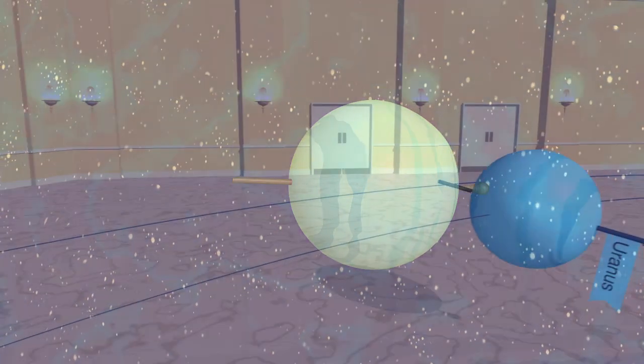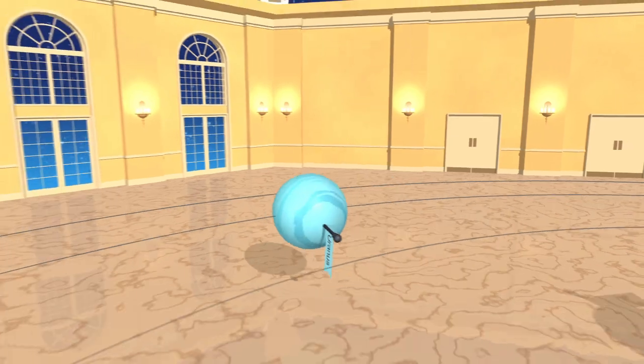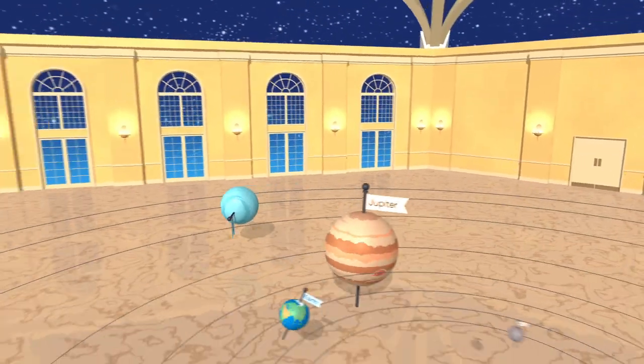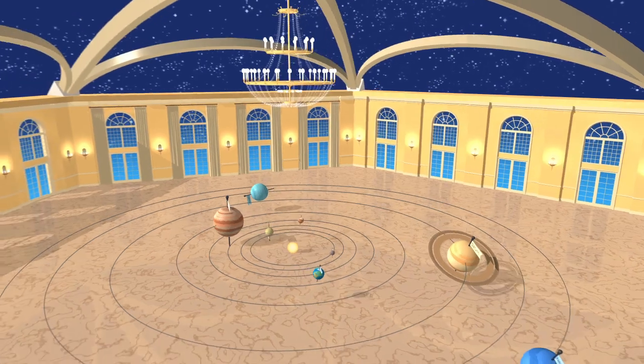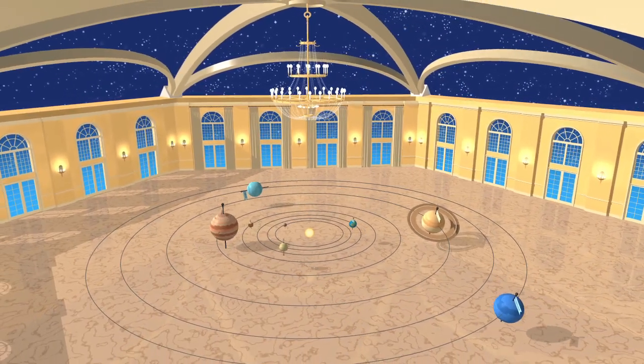Until we know for sure, the planet's extreme tilt remains one of the great mysteries in the dance of the universe. And Uranus will keep doing the side shuffle like nobody's watching.